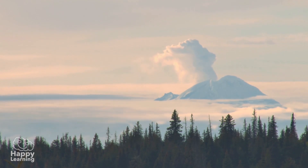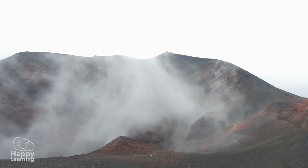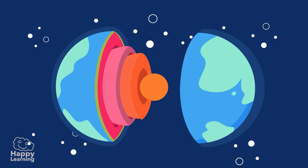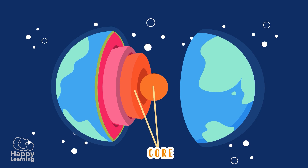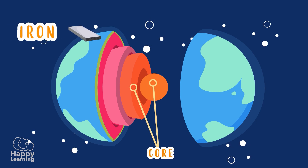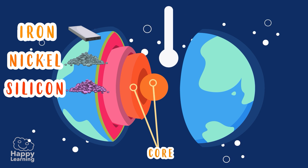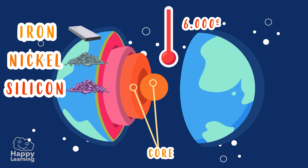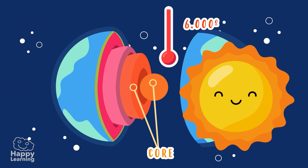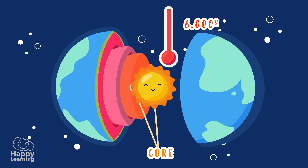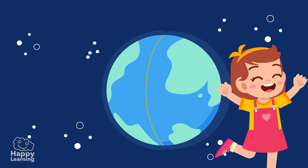Isn't it amazing to see what's going on in the layers of the earth? The innermost layer of the earth is the core. It is made of iron and other metals like nickel and silicon, and it is very, very hot, with a temperature of 6,000 degrees Celsius — more or less the same temperature as the sun. Could you imagine? A small sun inside the earth — it is amazing!